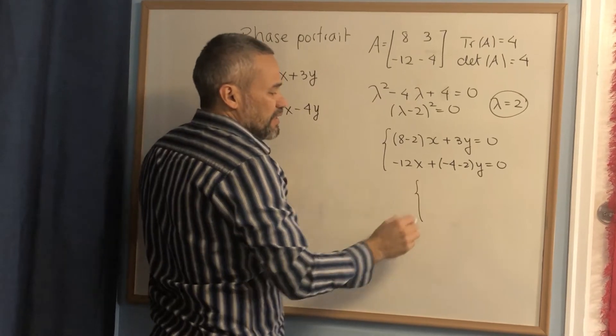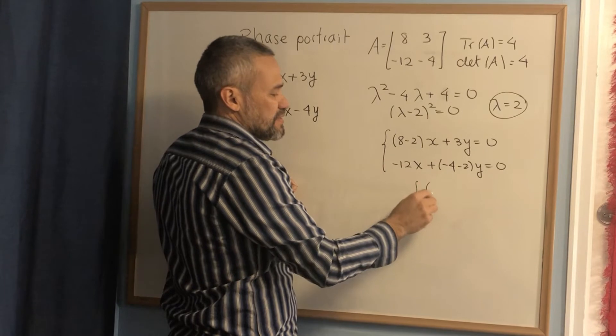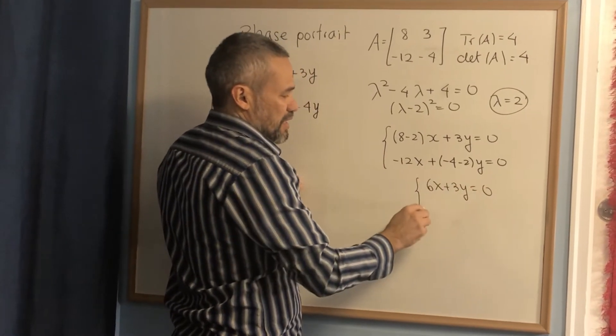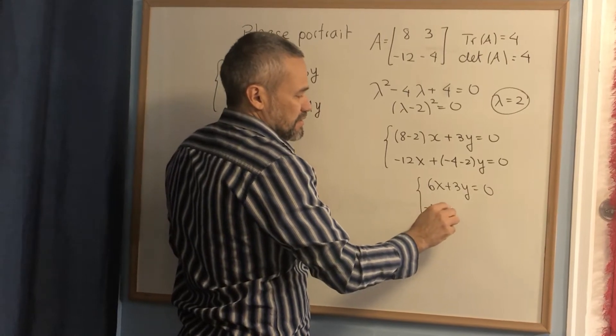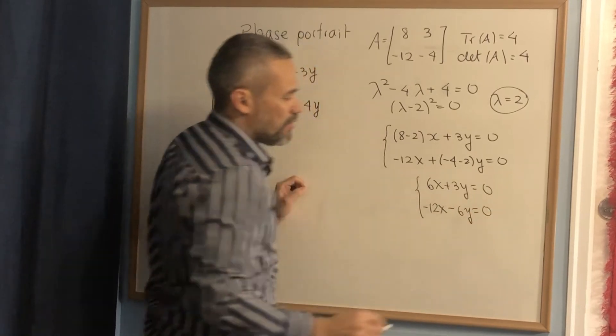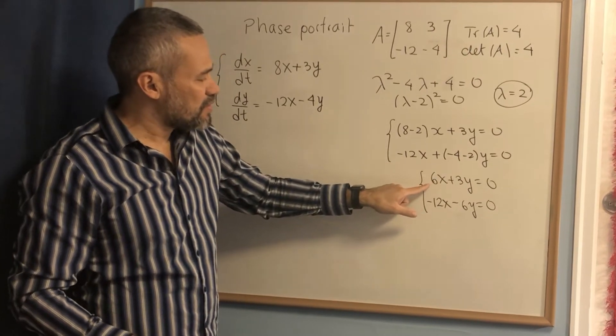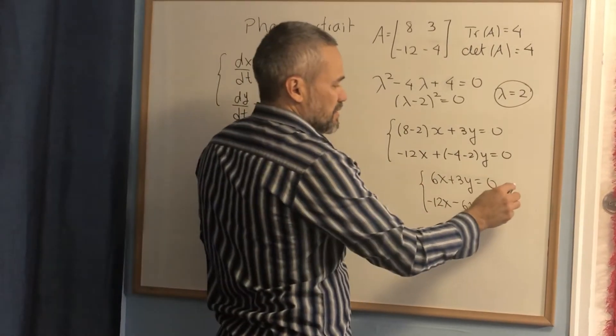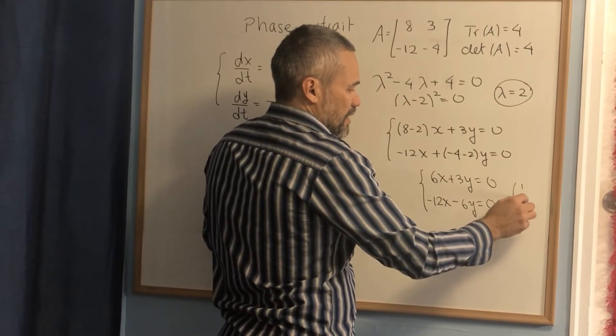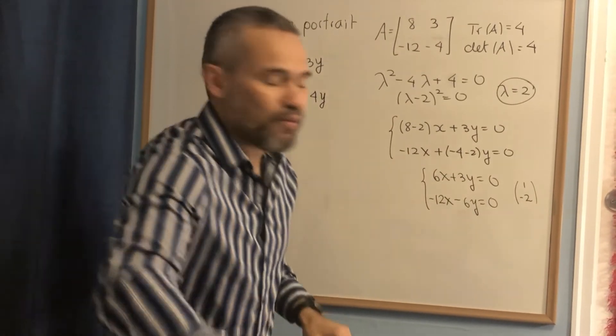If everything is okay, these two equations are supposed to be the same. Here we have 6x plus 3y equals 0, and negative 12x minus 6y equals 0. What is a solution of this? We can take x equals 1, y equals negative 2. This vector satisfies both equations.